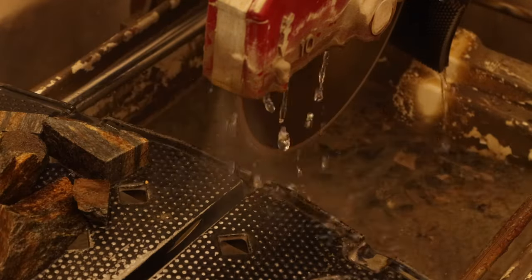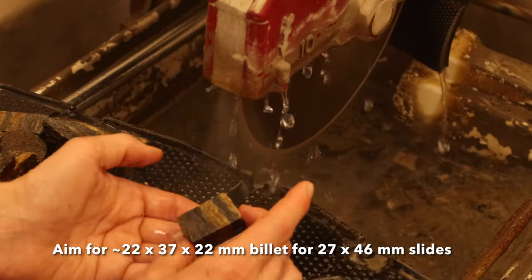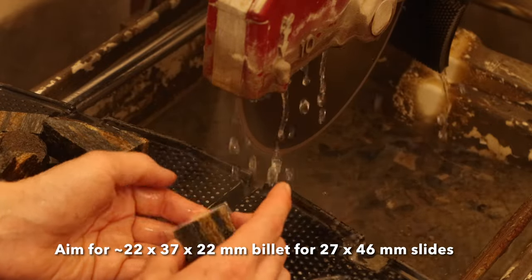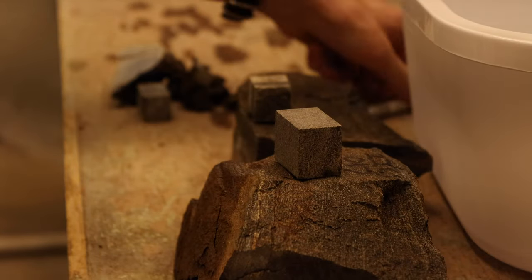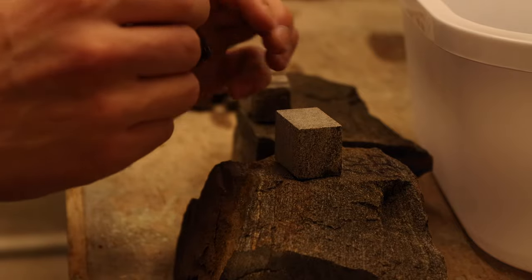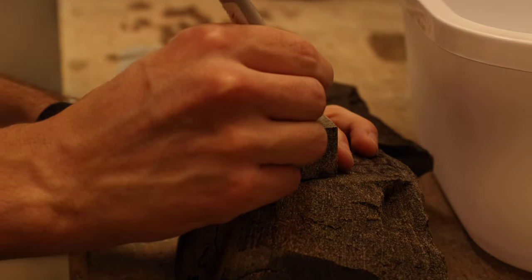It's always good if you can to have a rectangular billet without rough edges. You'll aim for these dimensions for the standard 27 by 46 millimeter slides. Then I like to stack my billets on the rocks and keep everything labeled as you go through.